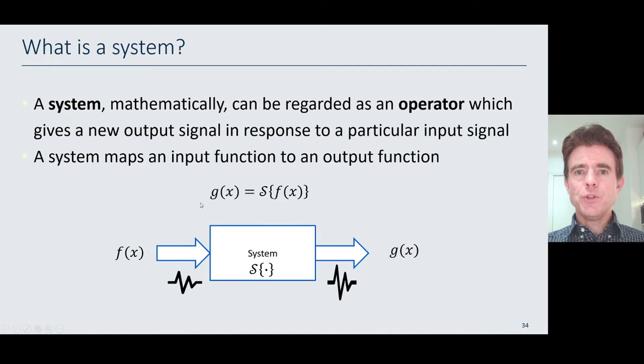So as we know, a system is basically an operator or a mapping that takes some input function, here for example f of x. Here's the system S with the curly braces showing it's some operator on that input function f of x, and it delivers some mapping, some output function g of x. So it's a function-to-function mapping.